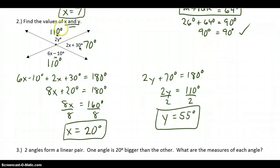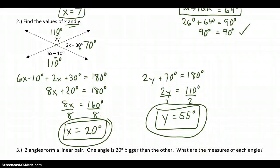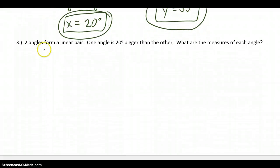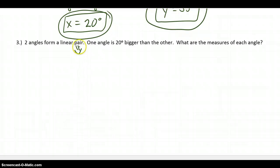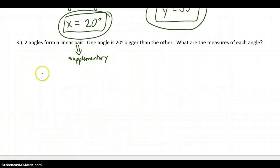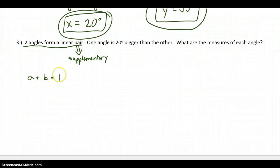Looking at the original statement, I need to find X and Y — here's my X equals 20 and my Y equals 55. For the last problem, again we have a word problem: two angles form a linear pair, one angle is 20 degrees bigger than the other — what are the dimensions of each angle? Let's take this one step at a time. I have two angles that form a linear pair, so those angles are going to be supplementary. I'll pick variables A and B. From this first sentence, A plus B equals 180 degrees.